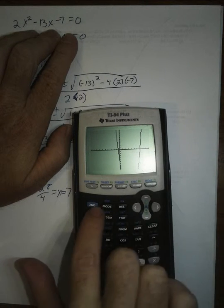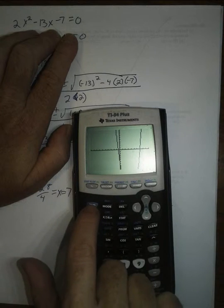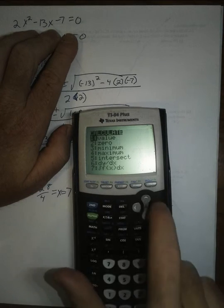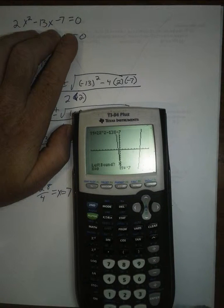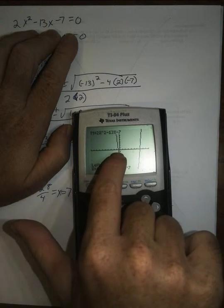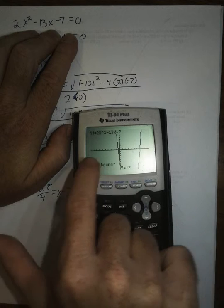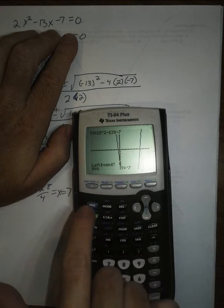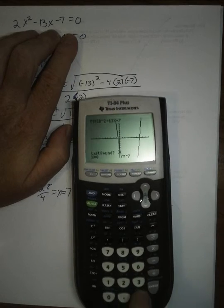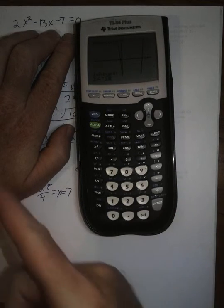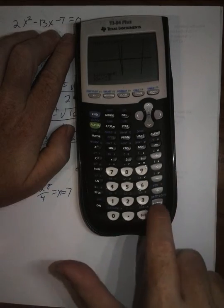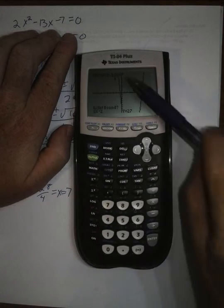And you can actually use the calculator to calculate those two zeros again by typing second, calculate, and you arrow down to the 0 and hit 0. All right. Now if I want to find this negative 1 half, I have to pick an x value to the left of it. So I could type negative 2. That's to the left of the value I'm looking for, and it puts this arrow here.